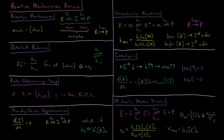Each of those elementary reactions will have some rate constant of their own as well. So a mechanism is the set of elementary steps which constitute a given complex chemical reaction which we observe.